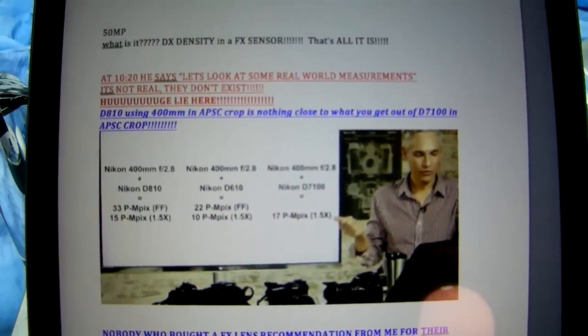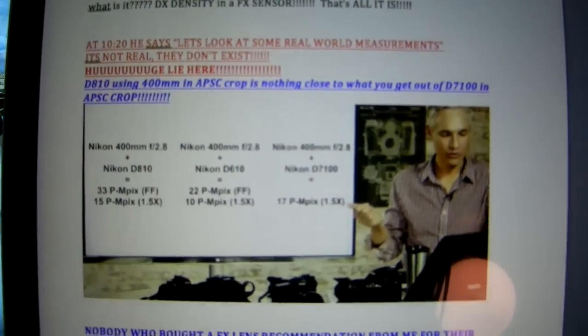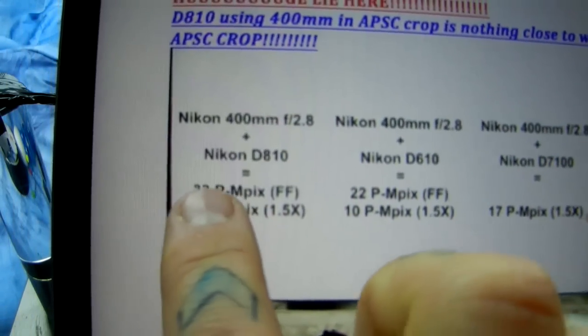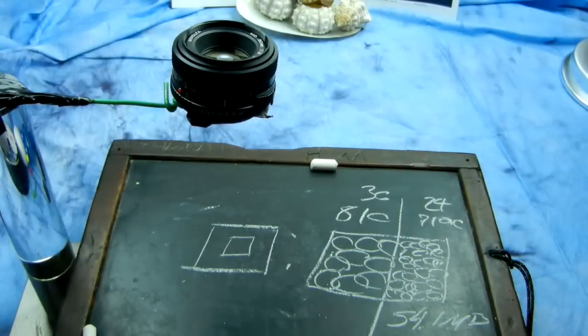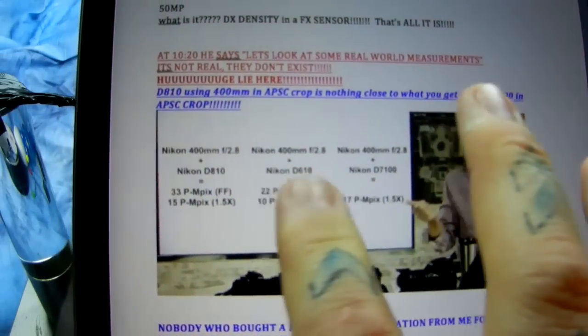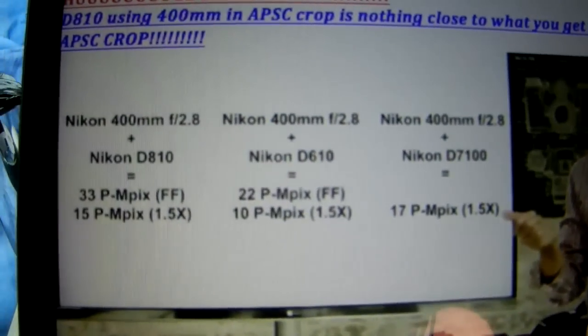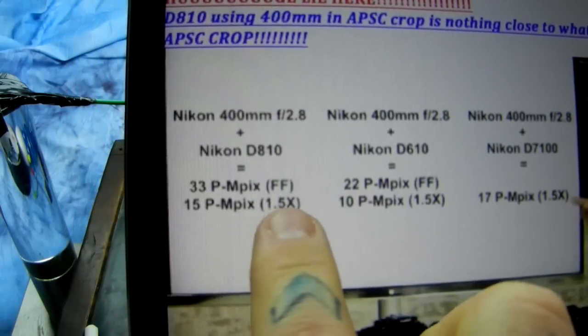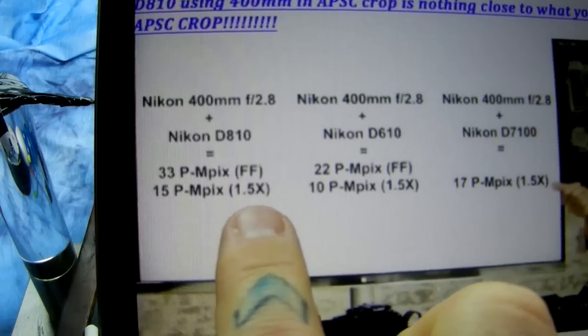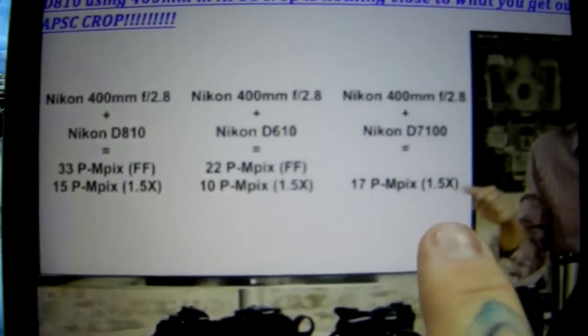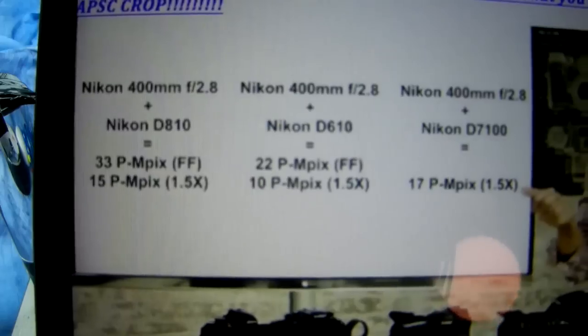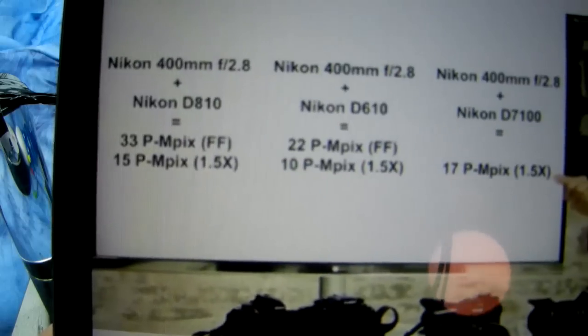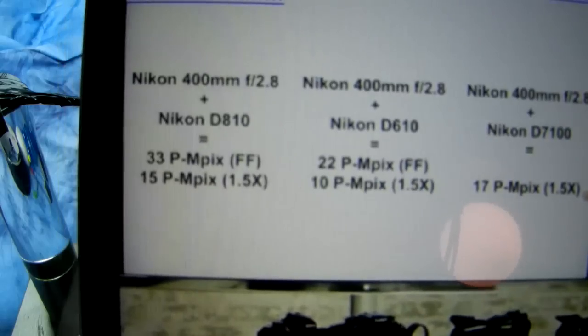Let's talk about some other things. At 10:20, he says, let's look at some real-world measurements. What real-world measurements? There's no such thing as a perceptual megapixel. He makes so many references, he calls it a p-mpix. Total nonsense. Now, here's one of the worst ones in the video. He talks about the 400mm 2.8, an insanely expensive one. Well, not that insanely expensive. But he talks about it on the Nikon D810. Then he talks about it on the D7100. Now, he says in APS-C crop sensor mode, that the perceptual megapixels, according to DxOMark, the most fraudulent BS site on the internet, that its perceptual megapixels is 15 versus 17. Well, that's really damn close. Let's split the difference and say they're both 16.